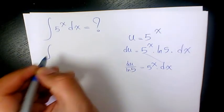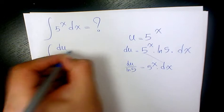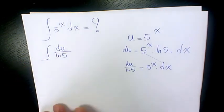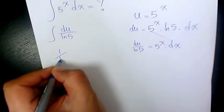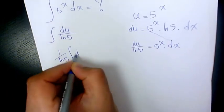So let's substitute it there. So we're going to have du over ln 5. So when you take ln 5 is constant, you take it out.